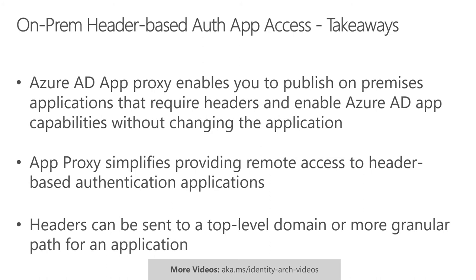Now that we've talked about how the flow works, let's recap. With Azure AD App Proxy, you can publish header-based auth apps and configure which specific attributes to include as headers for the app without changing your applications. App Proxy helps simplify providing remote access to your header-based auth apps, and the apps are not directly exposed to the internet. The connectors on-premises will only use outbound communication to the cloud service to receive and process requests, and pre-authentication should be used whenever possible for security.